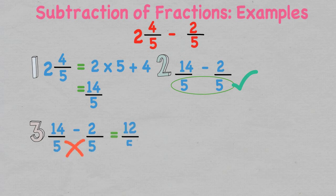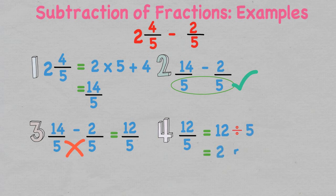We can simplify this back into a mixed fraction by dividing the numerator by the denominator: 12 divided by five is two with two left over. Therefore the final answer is two and two over five.